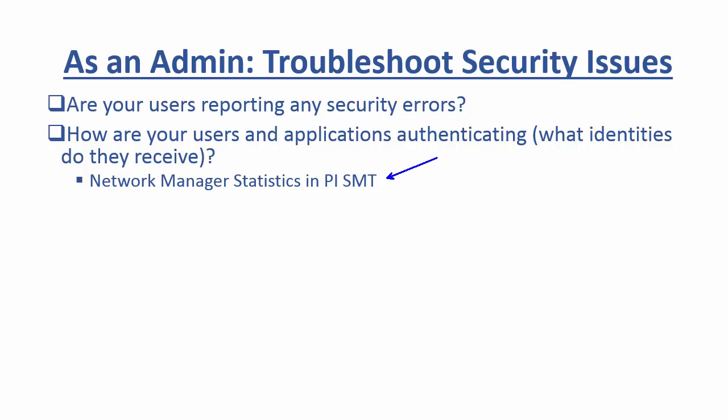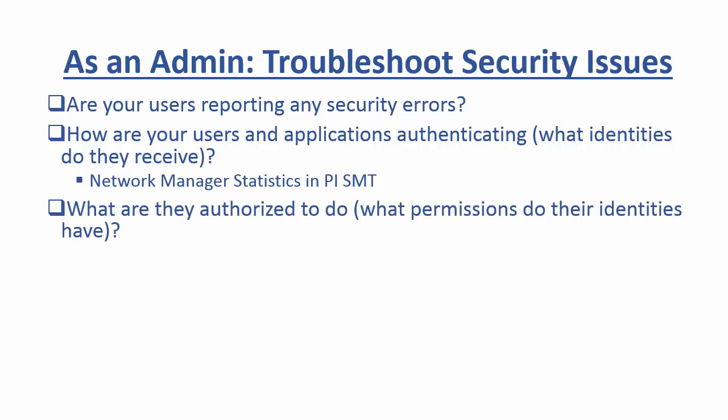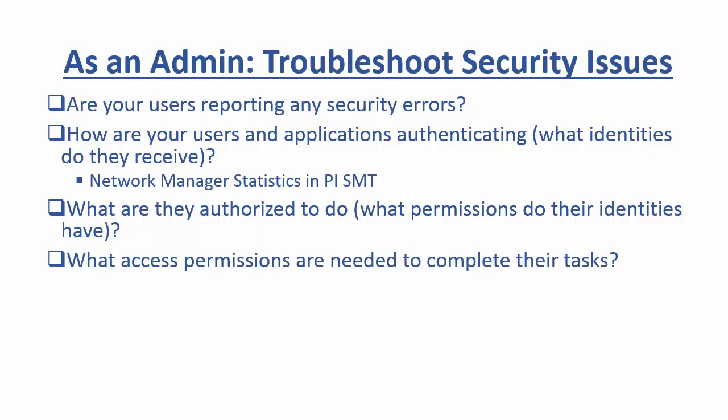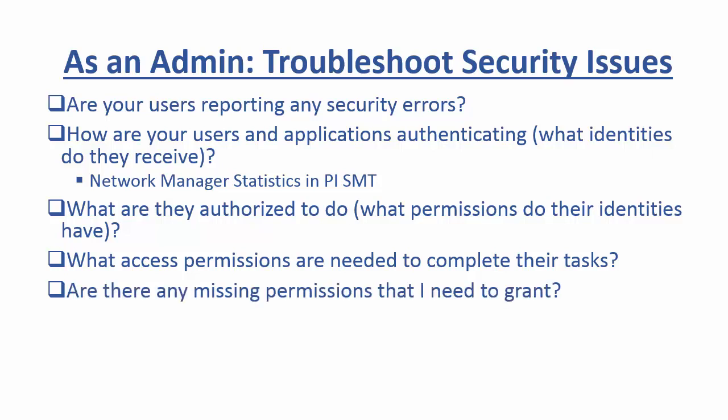After we know how a user or application specifically authenticates, we will then want to determine what are they authorized to do. This essentially means checking what permissions the identities they have received have. From there we can also reference what access permissions are needed to complete specific tasks, which will allow us to identify any missing permissions that we need to grant.